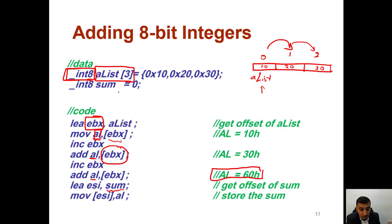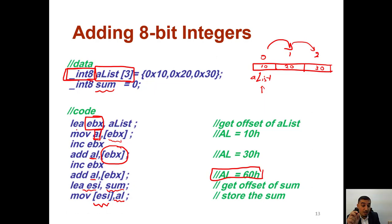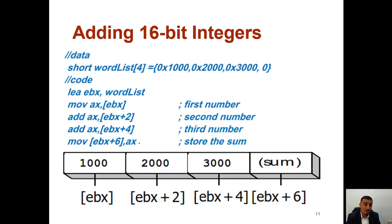AL will contain 60, which is 30 plus 30. Then load the effective address of 'sum' into ESI, which is the source index. Move whatever is in AL into the memory location specified by ESI. This is how to add the three memory locations when the type is __int8.